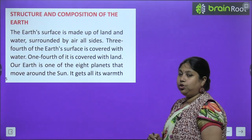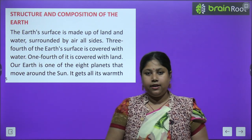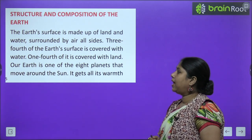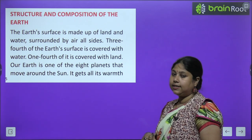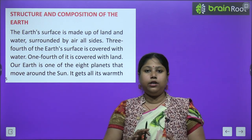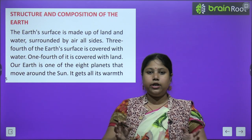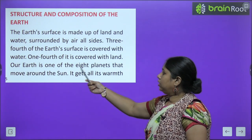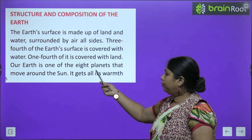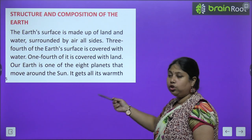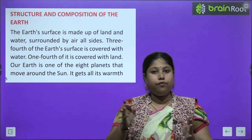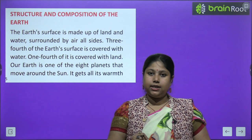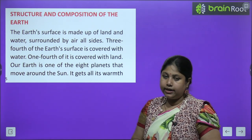Structure and Composition of earth — अब हम पढ़ेंगे कि earth कैसे बना है। The earth's surface is made up of land and water, surrounded by air on all sides। Earth का जो surface है, वो land और water से मिलकर बना है। Therefore, three-fourths of earth's surface is covered with water — earth को चार parts में divide करें तो तीन-fourth पानी से घिरा है और one-fourth land से।